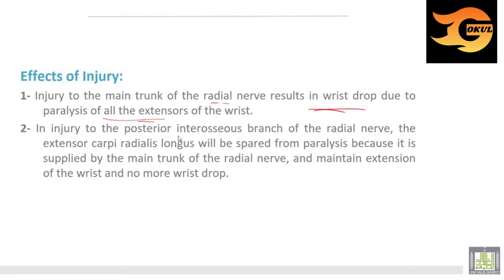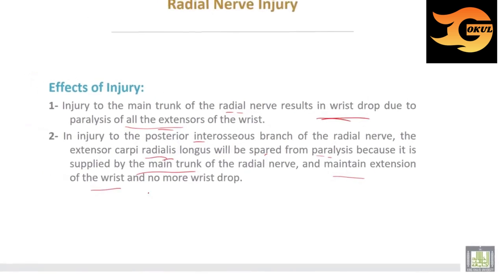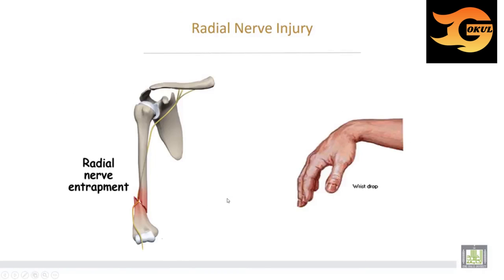With injury of the posterior interosseous nerve only, the extensor carpi radialis longus will be spared from paralysis because it is supplied from the main trunk of the radial nerve, and it can maintain extension of the wrist — so there is no wrist drop. This is the fracture shaft injury of the radial nerve in the spiral groove, and this is the deformity of wrist drop.